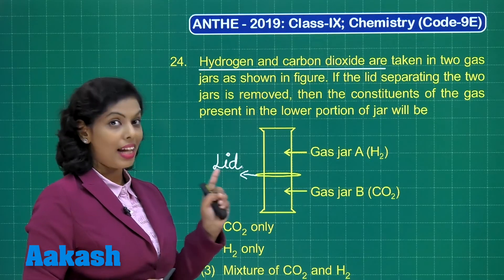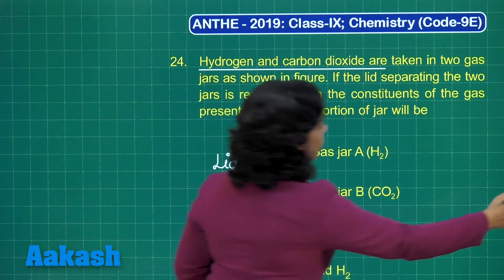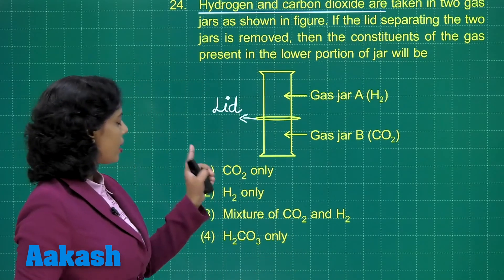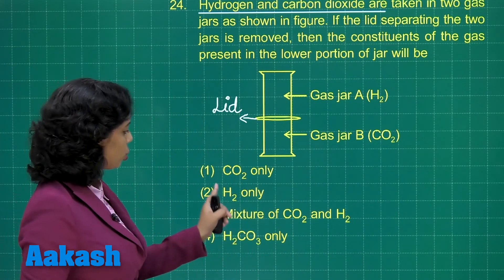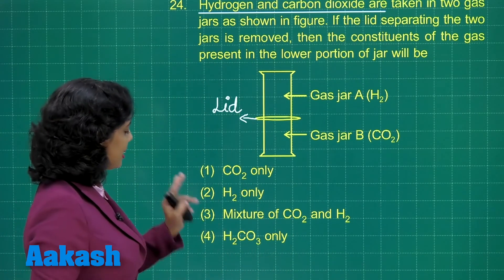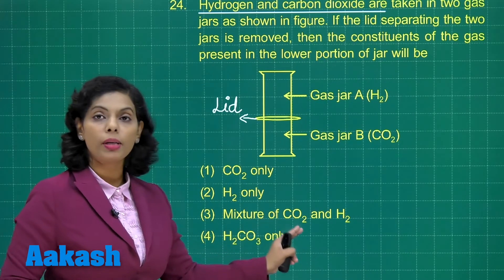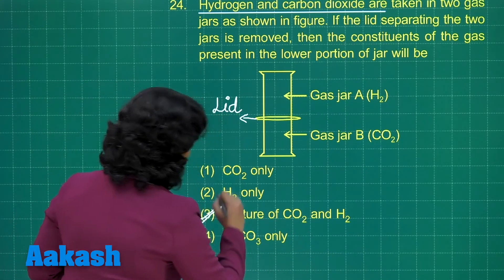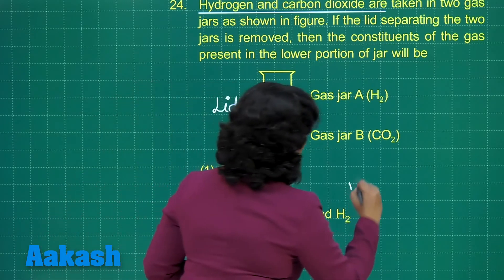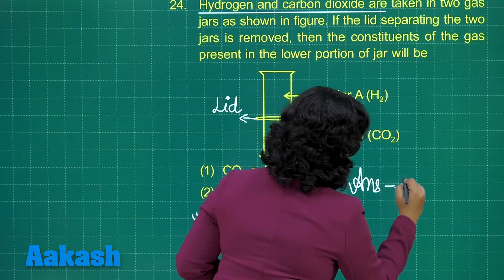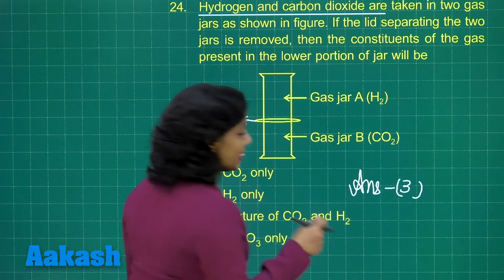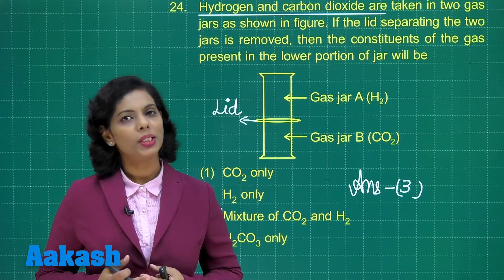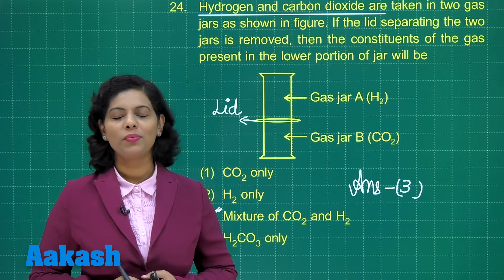After intermixing, the lower portion of the jar will contain both gases. The option 'carbon dioxide only' is incorrect, and 'hydrogen only' is also incorrect. Definitely it would be a mixture of both carbon dioxide and hydrogen, so that is the correct answer. Now let's move to question number 25.